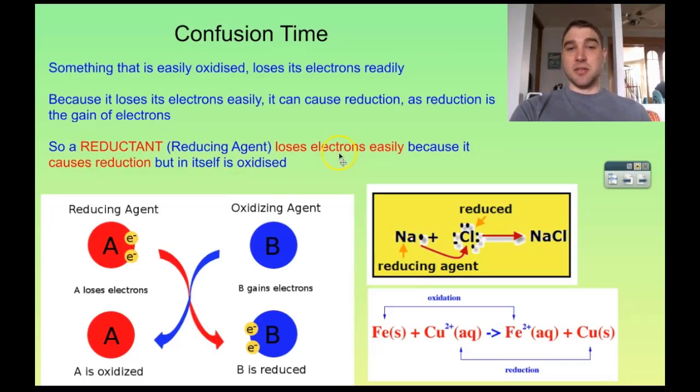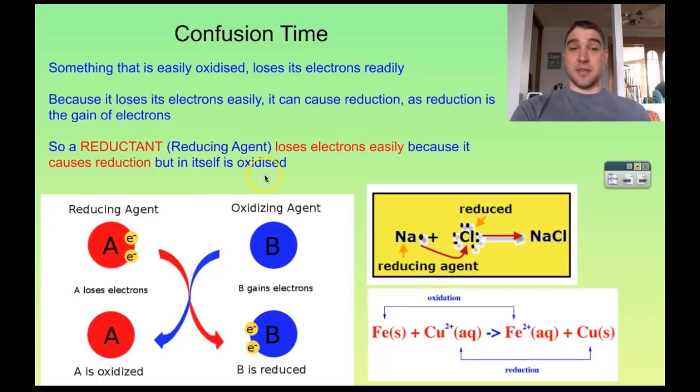A reductant loses its electrons easily. It causes reduction, but it itself is oxidized. So if something causes reduction, it is itself being oxidized.